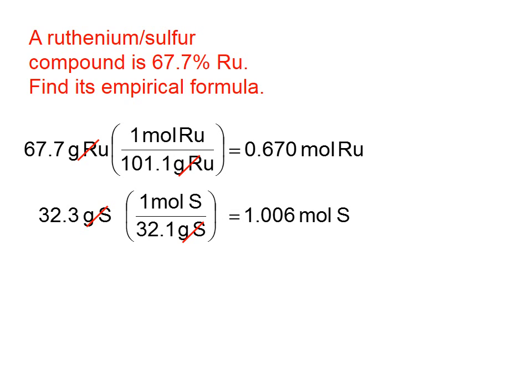Step 3 says, divide each of those numbers of moles by the smallest of those. Obviously, 0.67 is smaller than 1.006. So, we're going to divide both of those by the smaller of those. That's going to give us a number of 1 there. And it's going to give us a number very, very close to 1.5 for the sulfur.